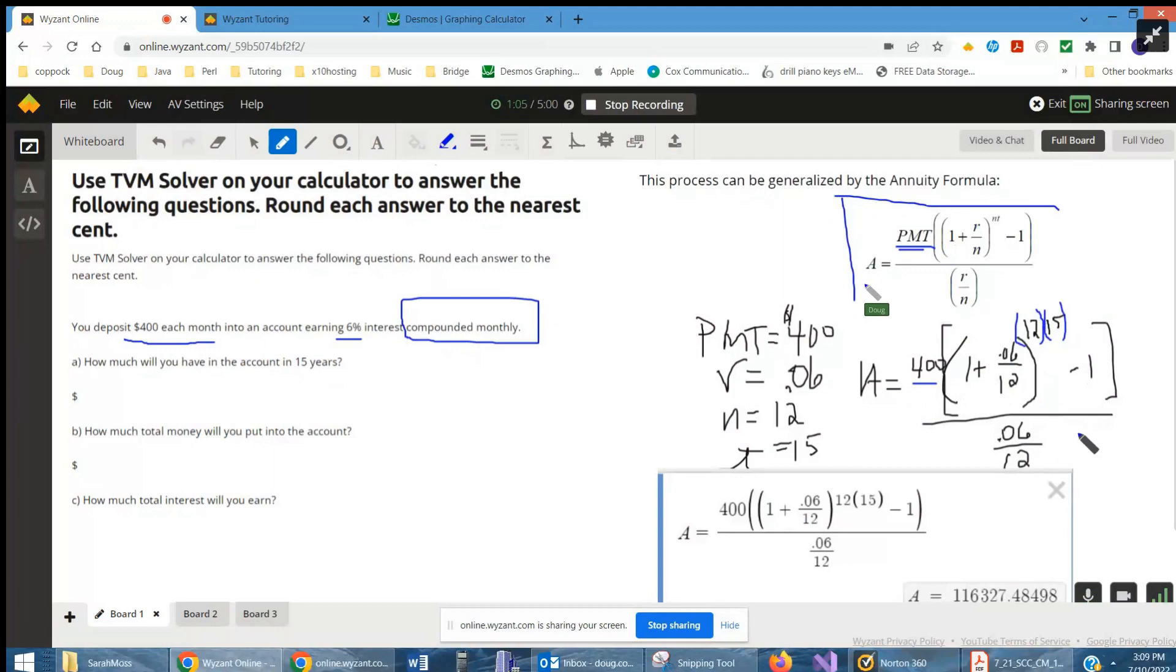Minus 1 over 0.06 divided by 12. And it looks like we get $116,300. The answer for part A, I'll just put 116,327.48. Okay.